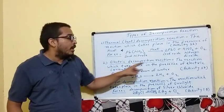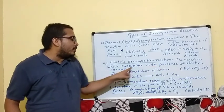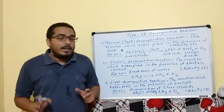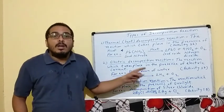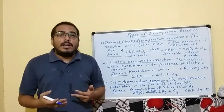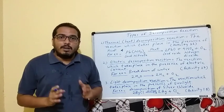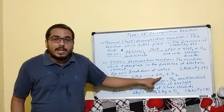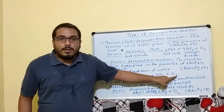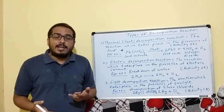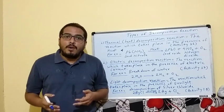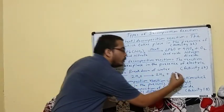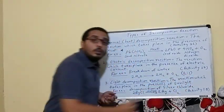The second type is electrolytic decomposition reaction — the reaction which takes place in the presence of electric current. For example, the breakdown of water: when water is broken down it is changed into hydrogen and oxygen. Two molecules of water break down to give two molecules of hydrogen and one molecule of oxygen.